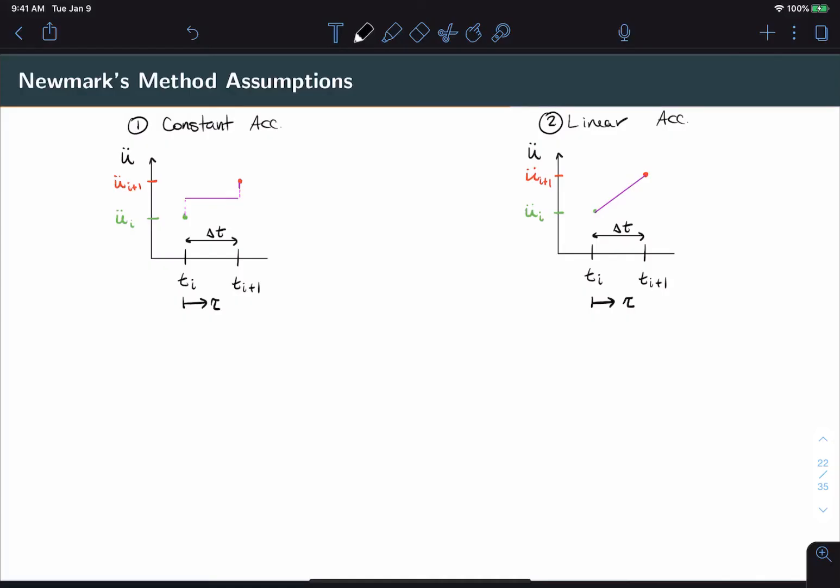Let's start with the derivation for constant average acceleration. We'll start by describing u double dot in terms of tau. This will look like a simple average of the acceleration at i plus one with the acceleration at i. From here, we integrate twice to get velocity and displacement.